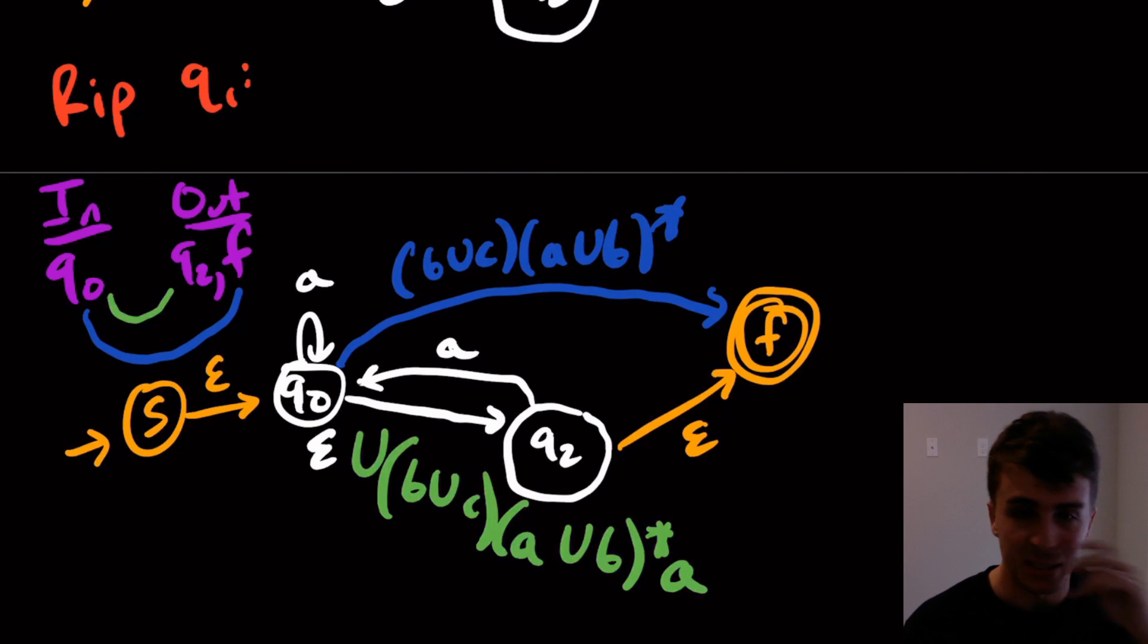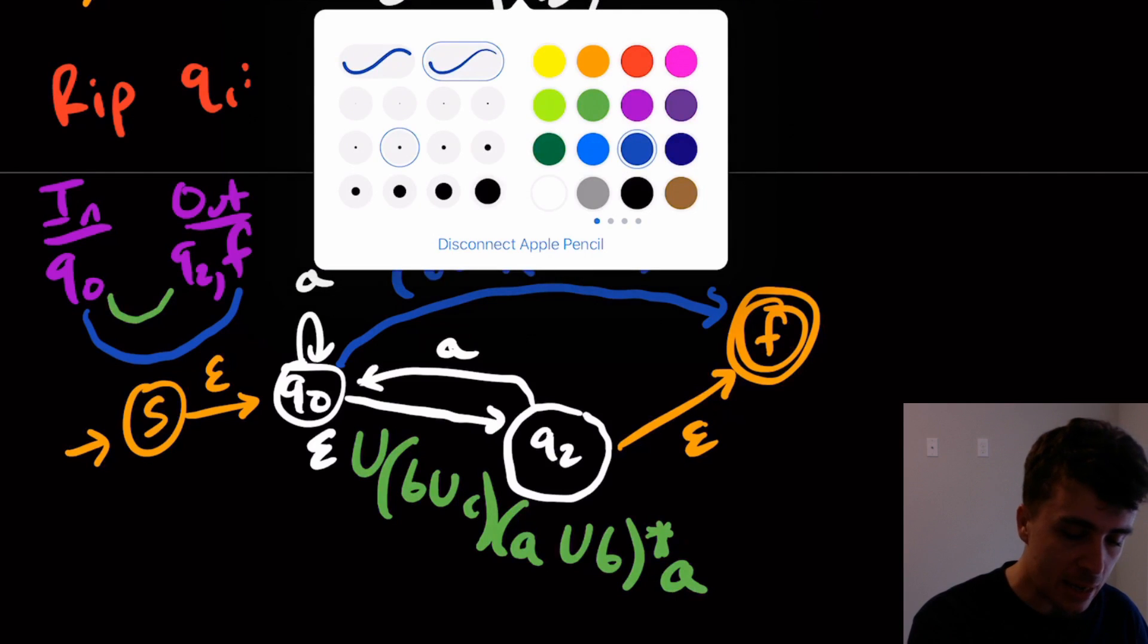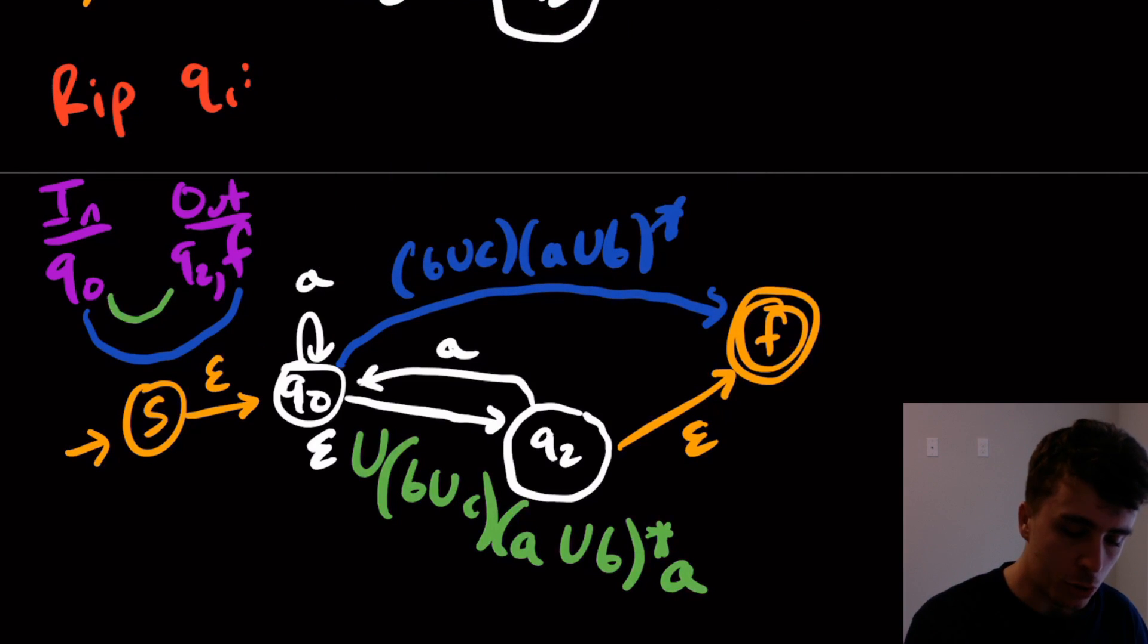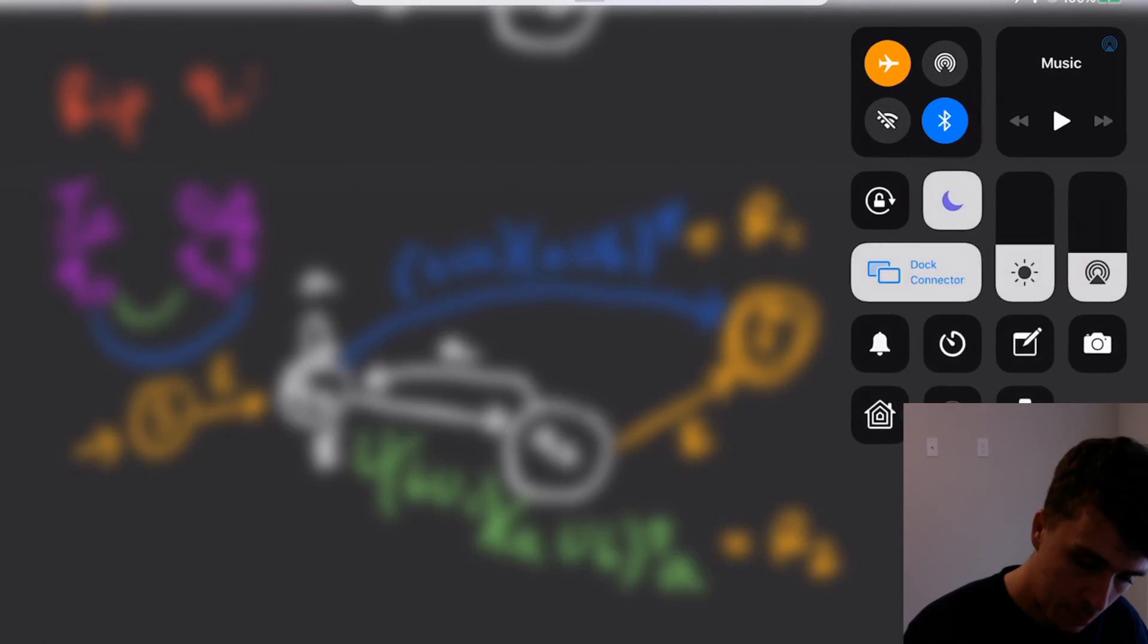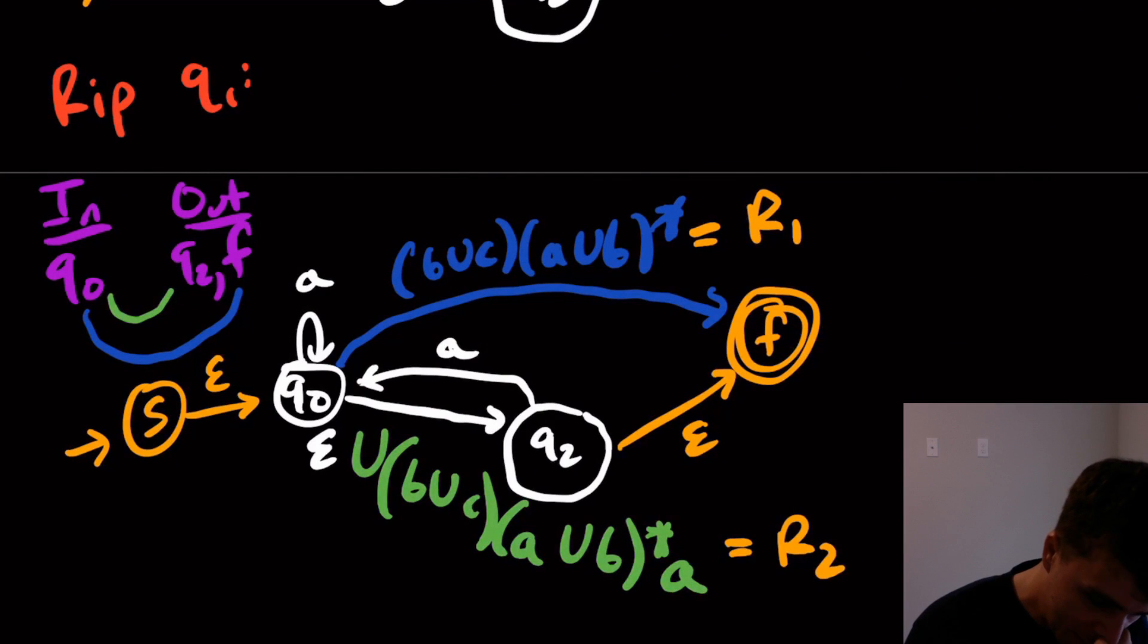And you might start to think, well, these transitions are starting to get a little big. So here's a thing that I, here's a pro tip. What I do is, I'm going to rename that regex as R1, and this regex as R2. So yeah, here, what I'm going to do is, I'm going to label this regex as R1, and this whole regex as being R2.